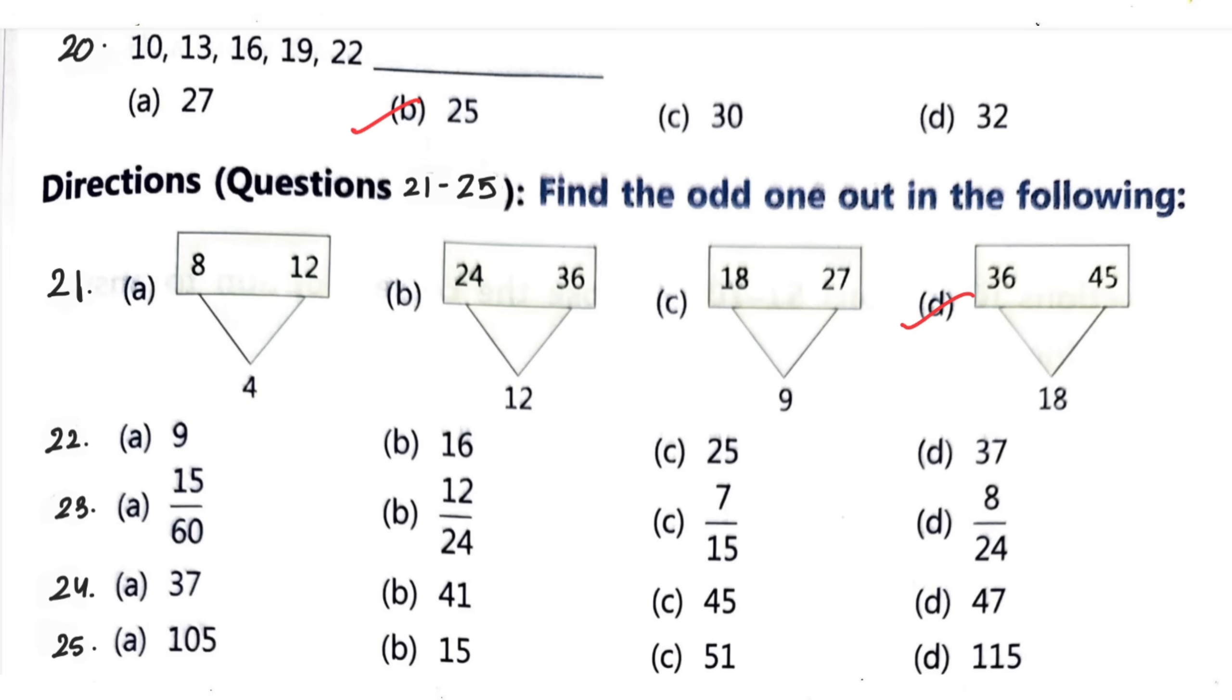Question number 22: here four numbers are given, 9, 16, 25 and 37. Odd one out is again D, 37. Question number 23: 15 by 60, 12 by 24, 7 by 15 and 8 by 24. Odd one out is 7 by 15. Question number 24: 37, 41, 45 and 47. Odd one out is C, 45.